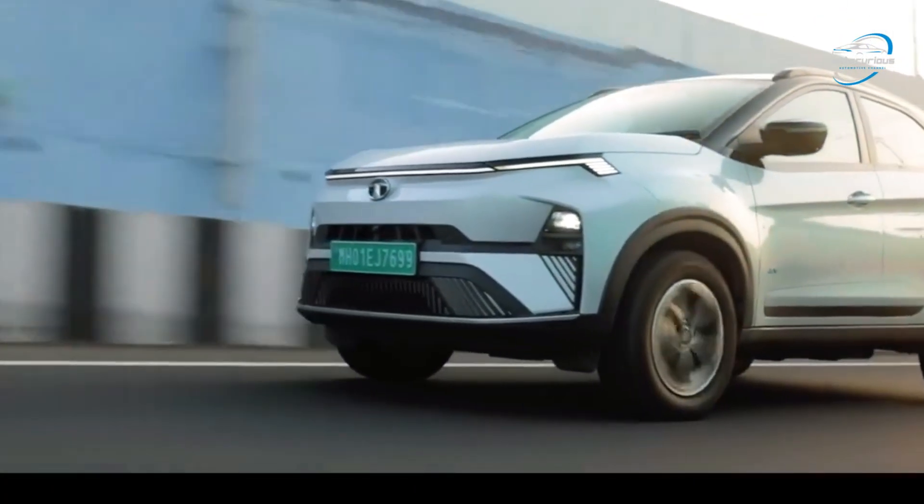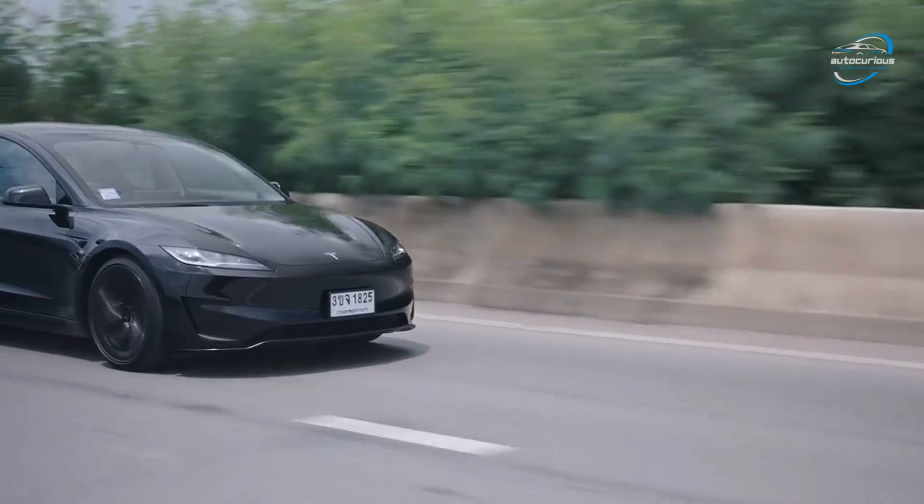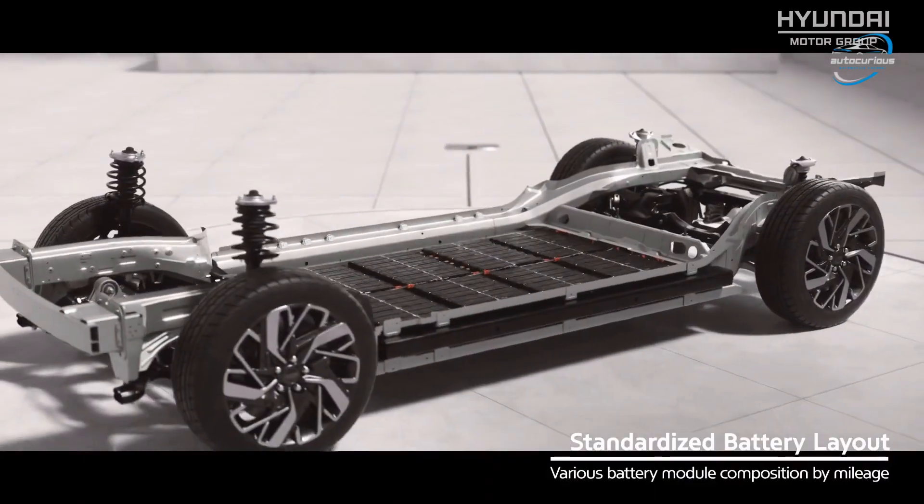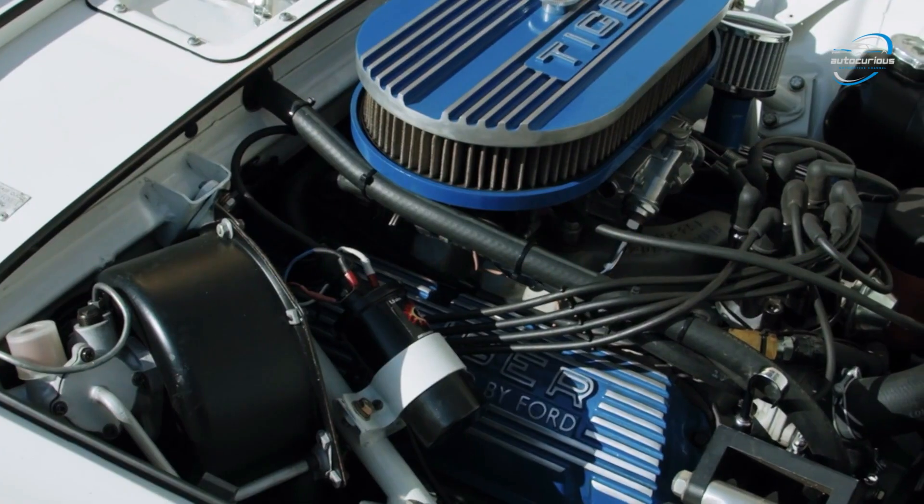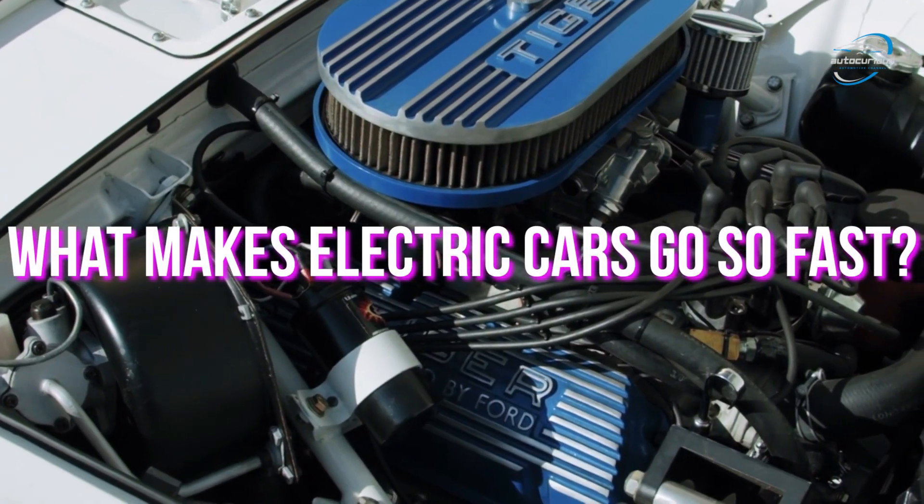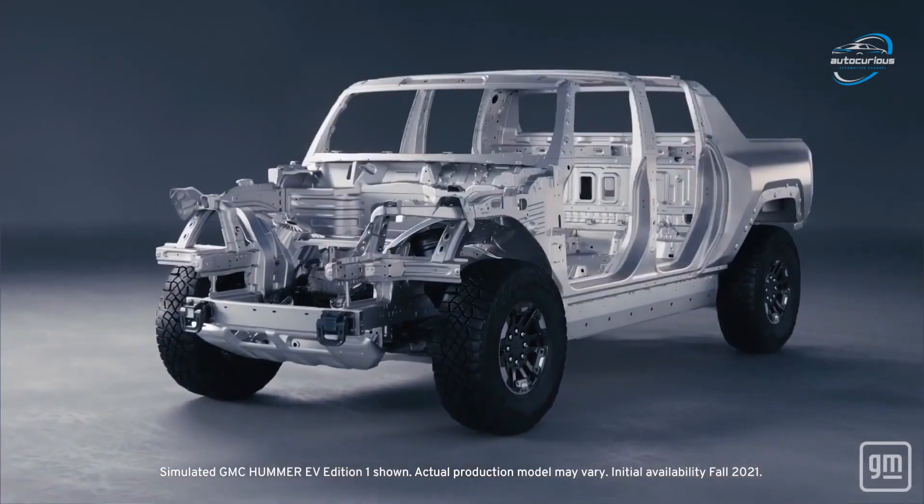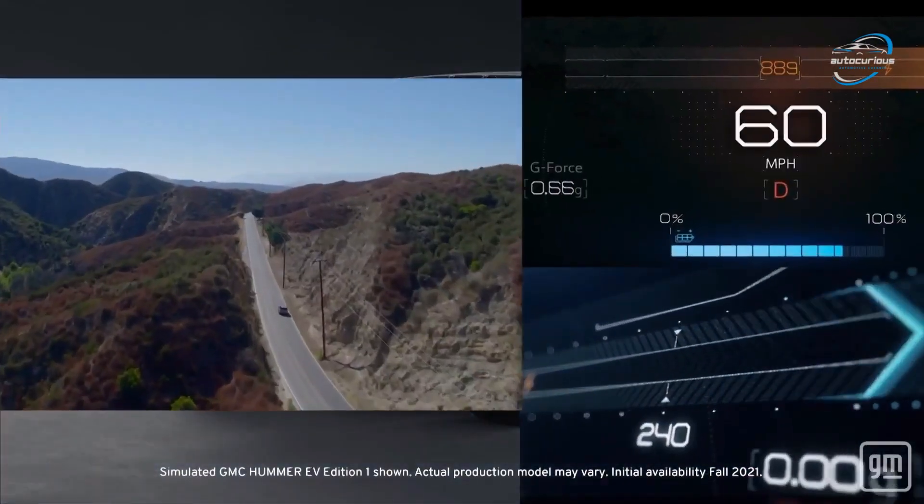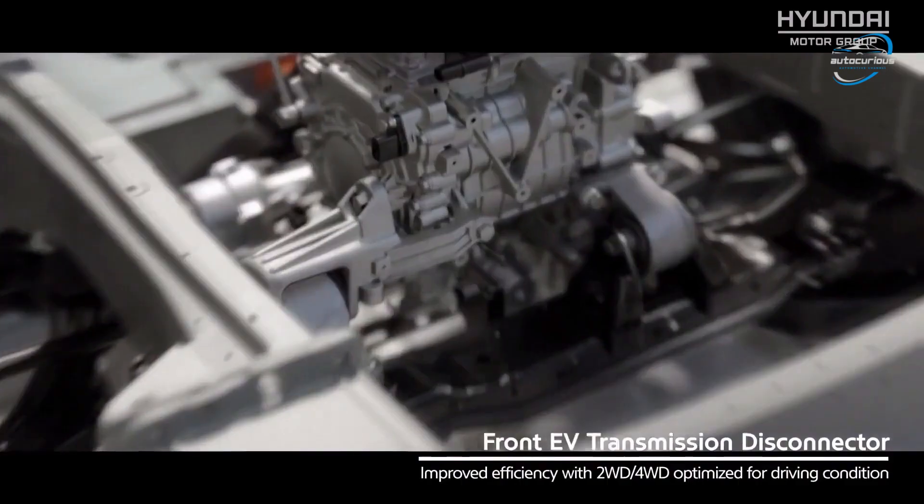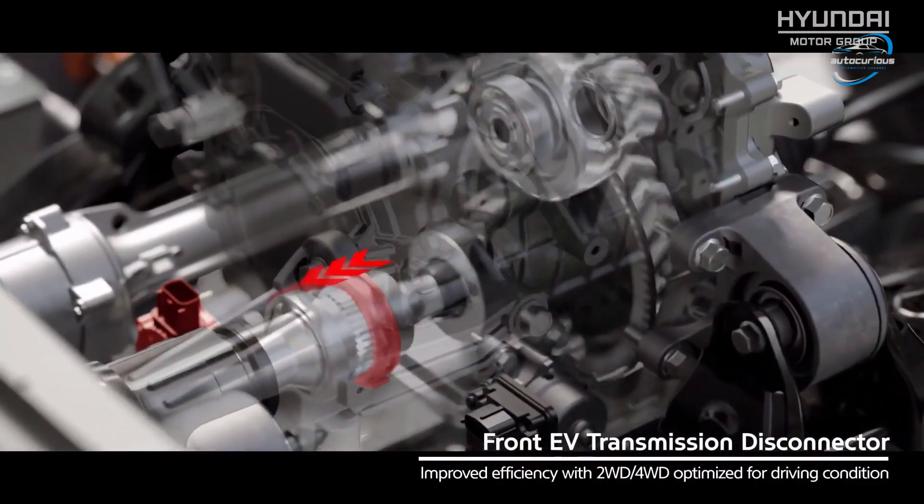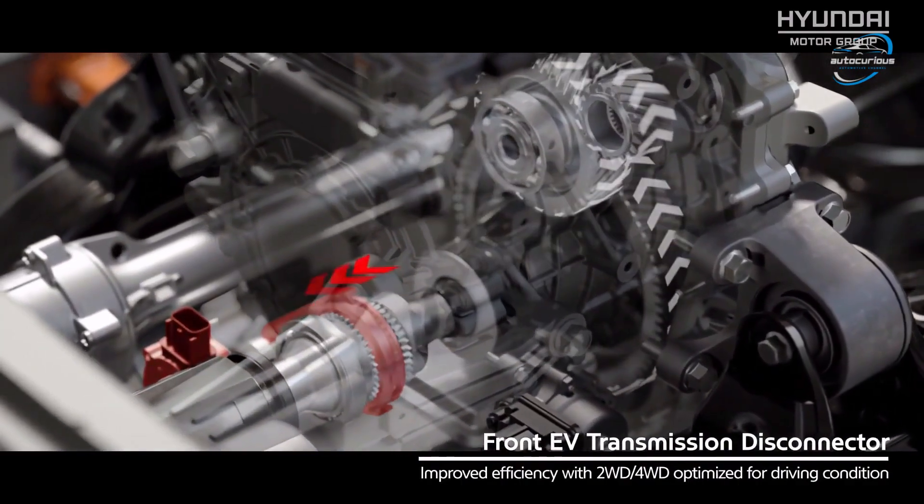Electric vehicles like the Tata Nexon EV or the Tesla Model 3 usually use single speed automatic gearbox. Since electric motors produce instant torque across all RPMs, they don't need multi-speed transmissions. That means no gears, no lag, just smooth silent power.